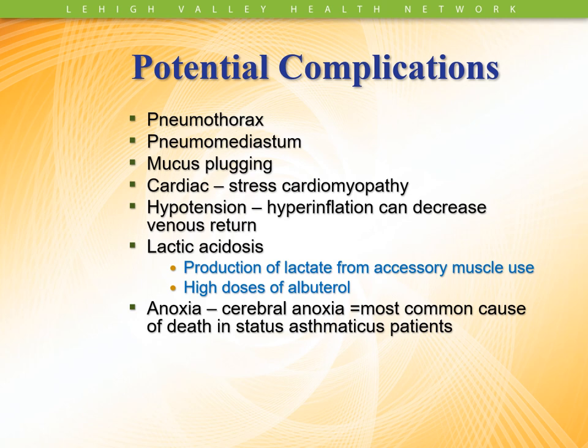Hypotension — especially if you get a pulsus paradoxus — where the hyperinflation can actually decrease venous return because the pleural pressure is so high and is transmitted to the great vessels. You can get lactic acidosis from production of lactic acid from accessory muscles being used, with a lot of anaerobic respiration and not a lot of ATP being produced. High doses of albuterol can also cause lactic acidosis. Patients can get anoxic from cerebral anoxia, which is a very common cause of death in asthmatic patients — an irreversible neurological injury when they become hypercarbic and hypoxic.